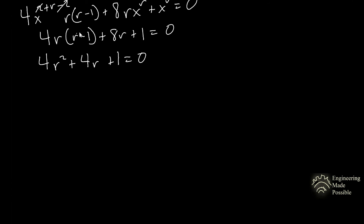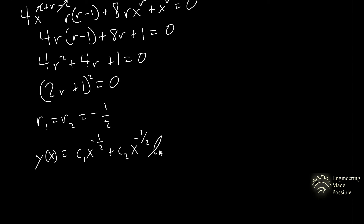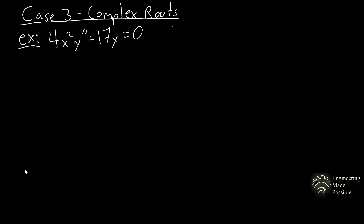Factoring gives (2r plus 1) squared equals zero, so we have repeated roots: r₁ equals r₂ equals negative one-half. For repeated roots, the general solution to the Cauchy-Euler equation is c₁ times x to the r₁ plus c₂ times x to the r₁ times the natural log of x. Here that is c₁ times x to the negative one-half plus c₂ times x to the negative one-half times ln(x).